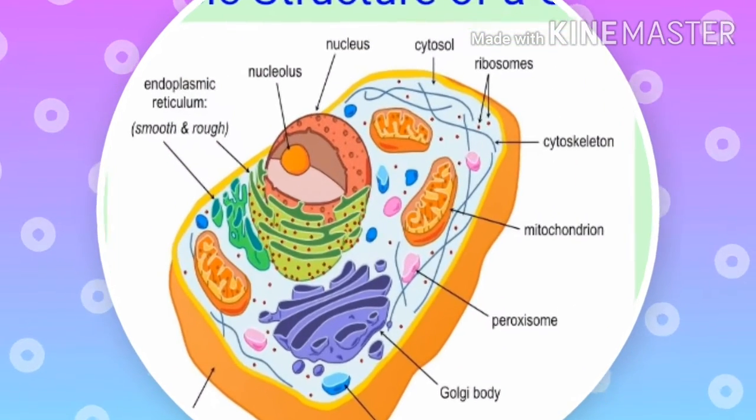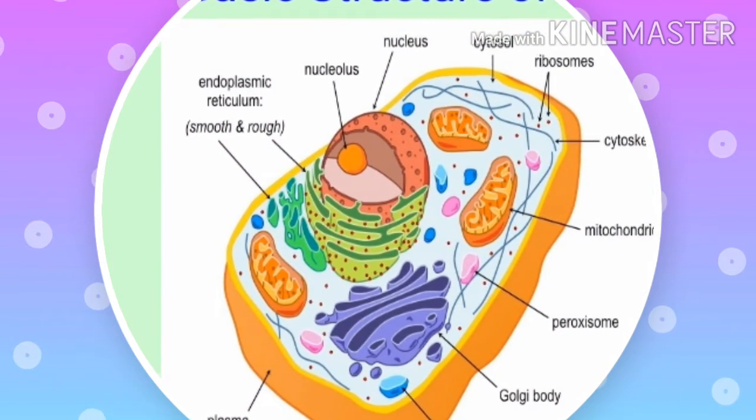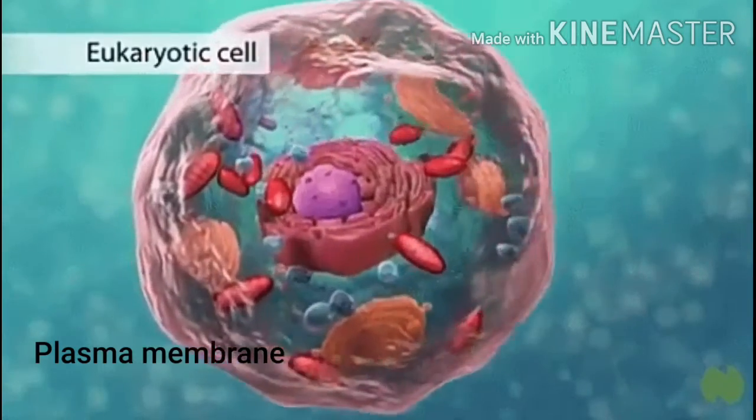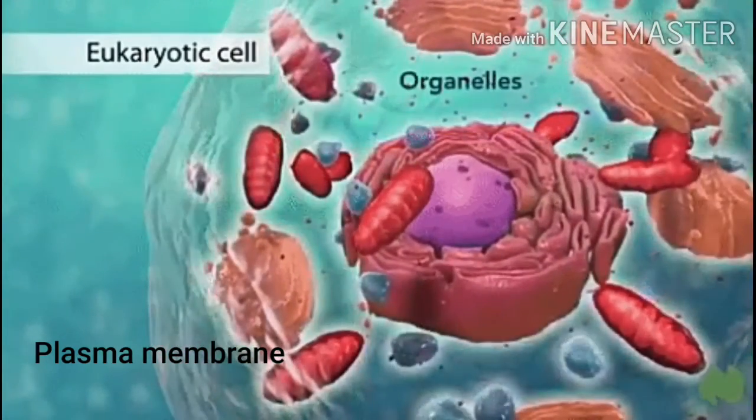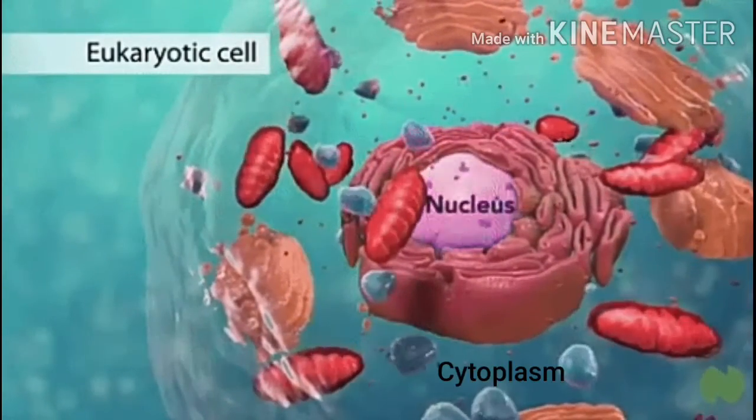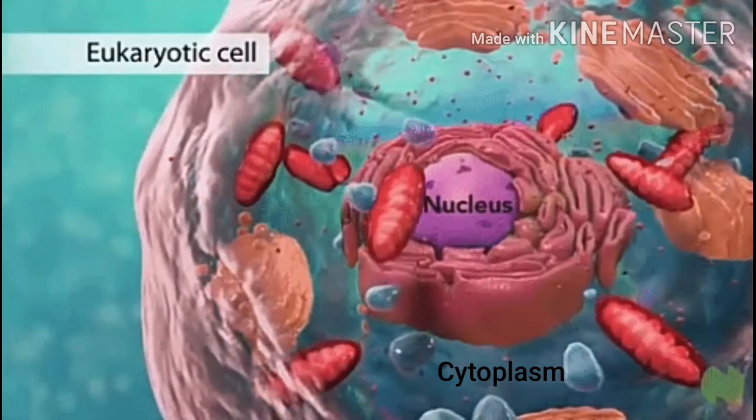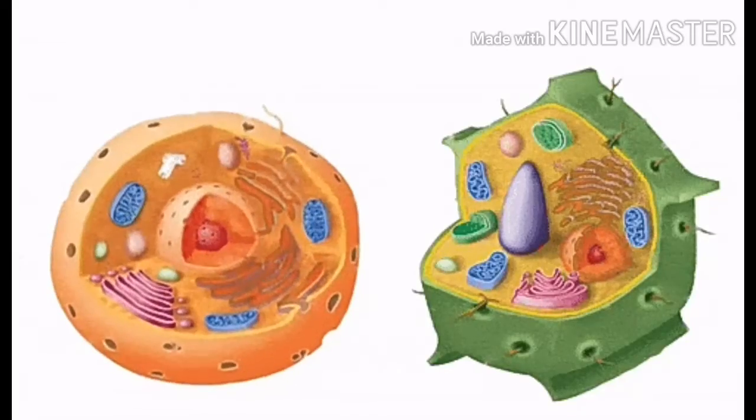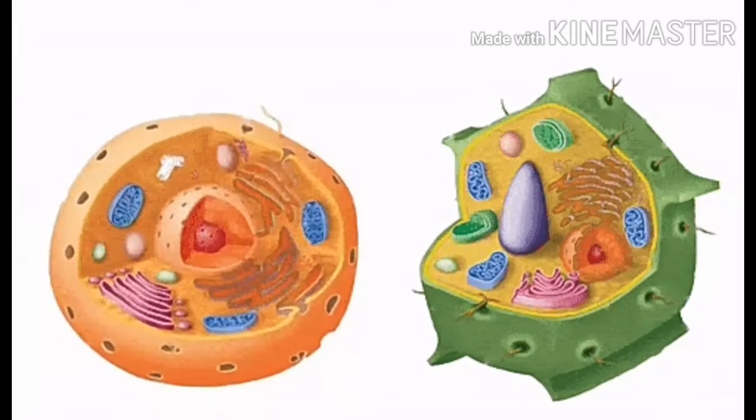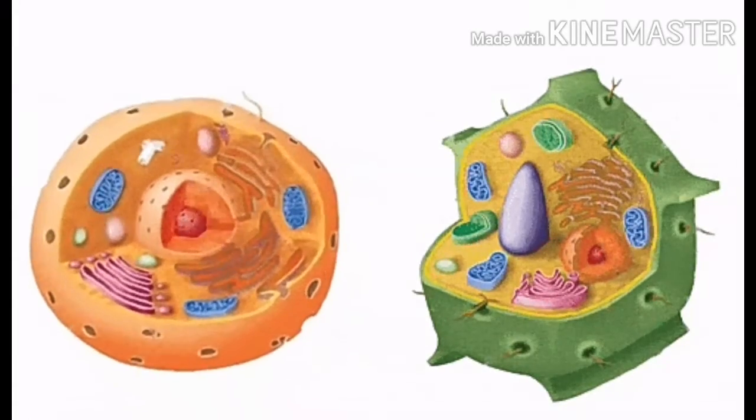Every cell possesses three basic features in common, i.e. plasma membrane, nucleus and cytoplasm. Due to the presence of these features, all activities inside the cell and interaction of the cell with its environment are possible.